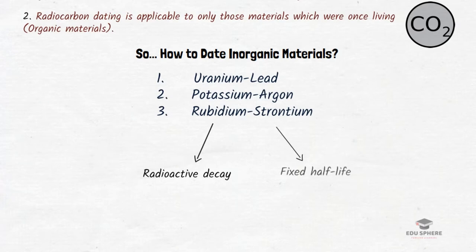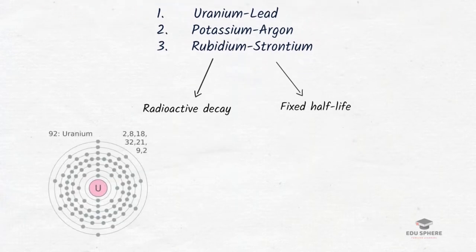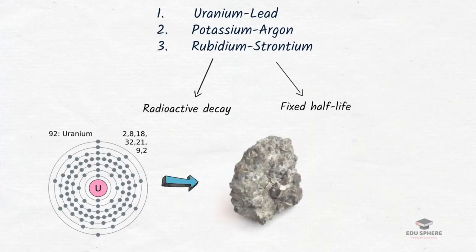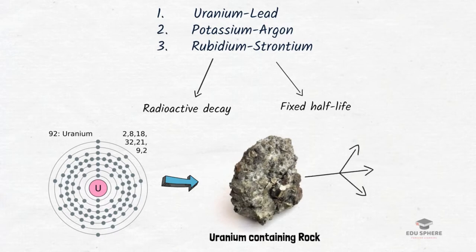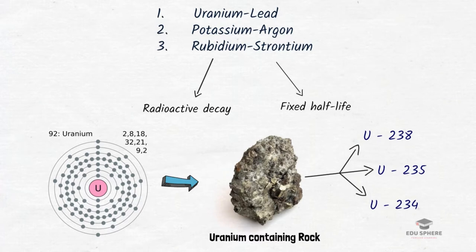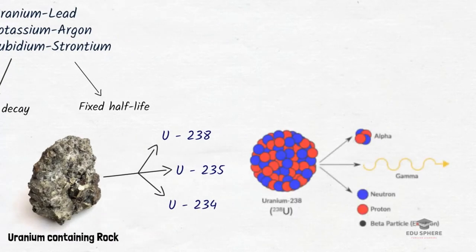You already know that uranium is the heaviest atom present in the natural environment. The uranium-lead dating method can be used to find the age of a uranium-containing mineral only. Natural uranium consists of three isotopes — U238, U235, and U234 — all of which are radioactive and unstable, transforming into other elements through emission of alpha or beta particles accompanied by gamma radiation.